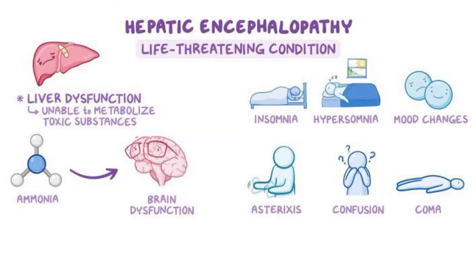Normally in our body, ammonia is produced due to two different conditions. First, ammonia is produced internally due to the metabolism of different substances. Secondly, ammonia is also absorbed from the large intestine and enters into our portal system, and after that it enters into our blood. This ammonia is normally removed from our body by the liver, because ammonia is very dangerous for our brain.